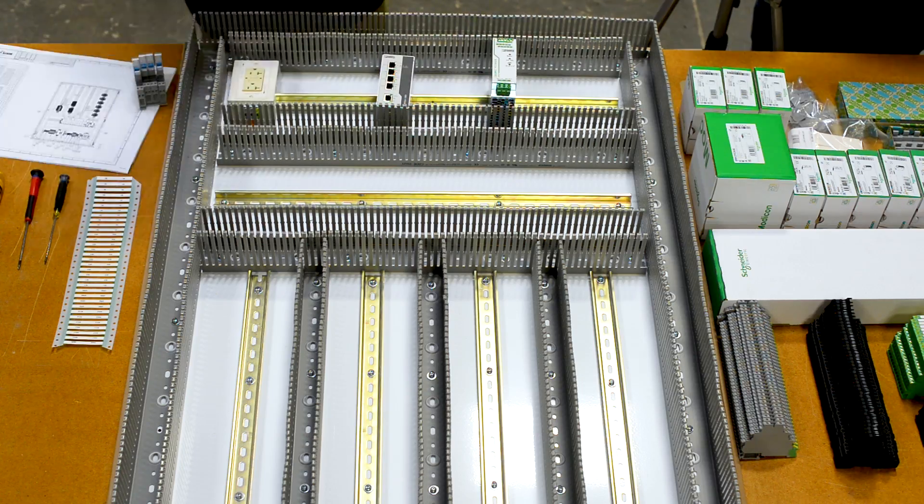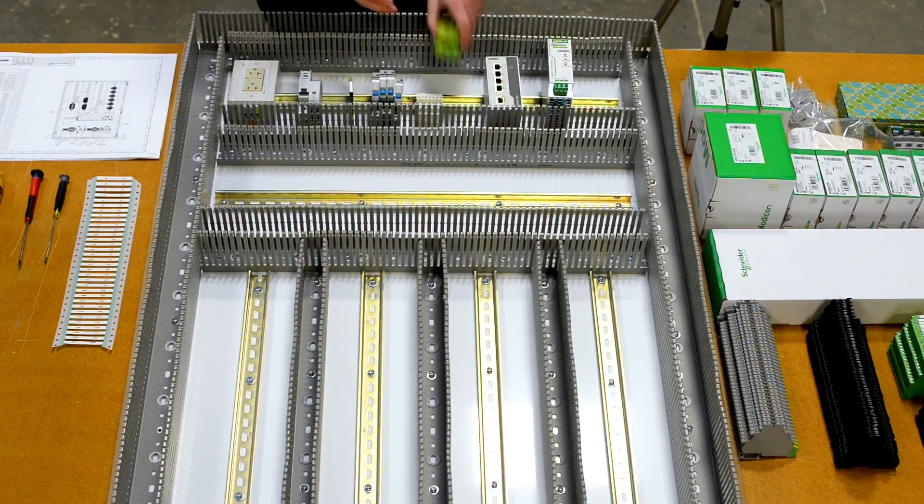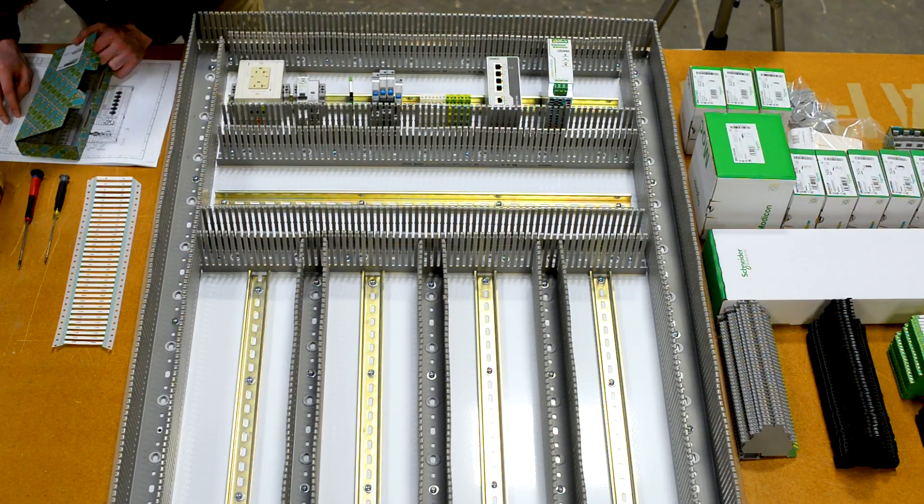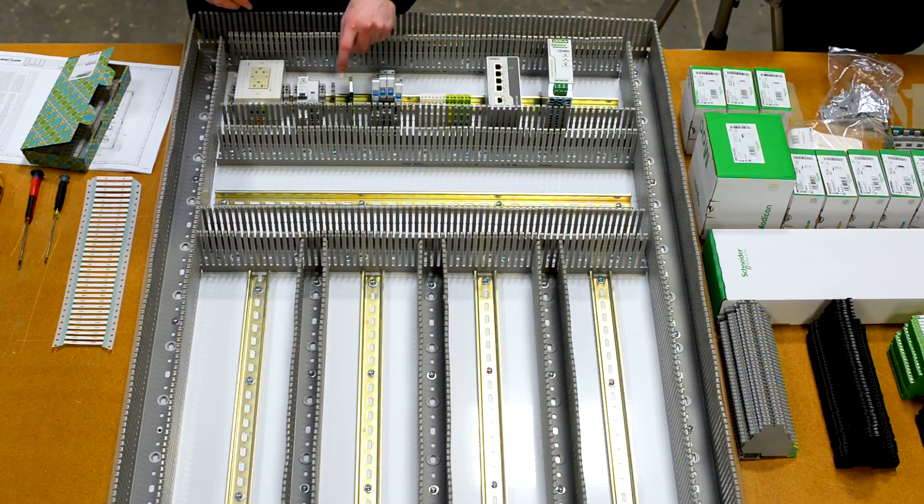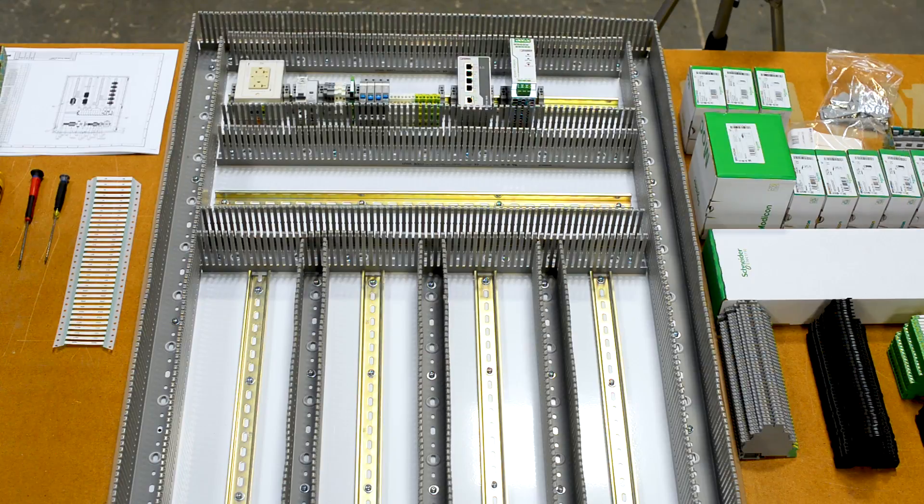This is going to include things like our power supply, any and all terminal blocks, circuit breakers, network switches, and all other relevant hardware that is DIN rail mounted. We also want to make sure that we put everything in the proper location.